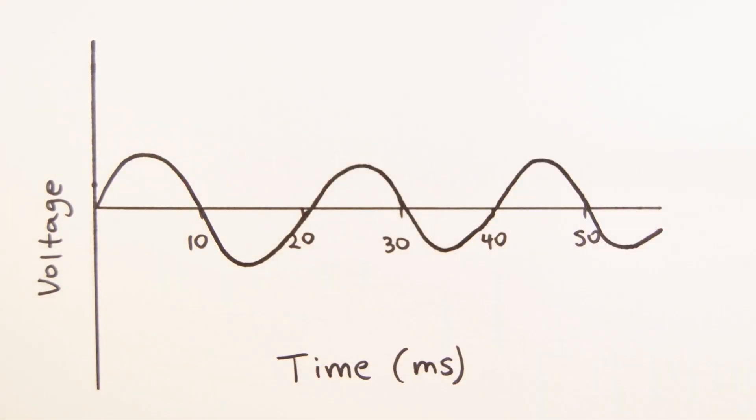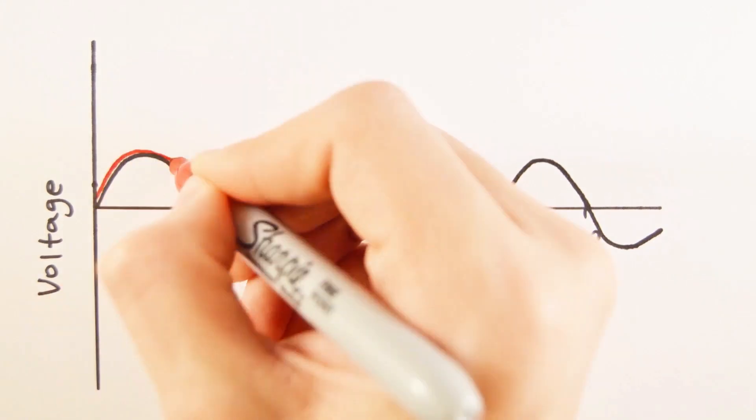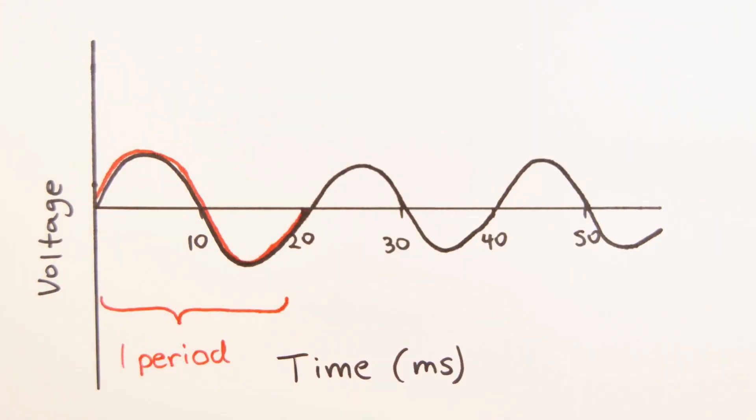You can calculate the period and frequency from an oscilloscope trace. The period is the time taken for one complete oscillation. You can find this by simply looking at the time between one peak and one trough, or at any two identical positions on the curve. The period in this case is 20 milliseconds.